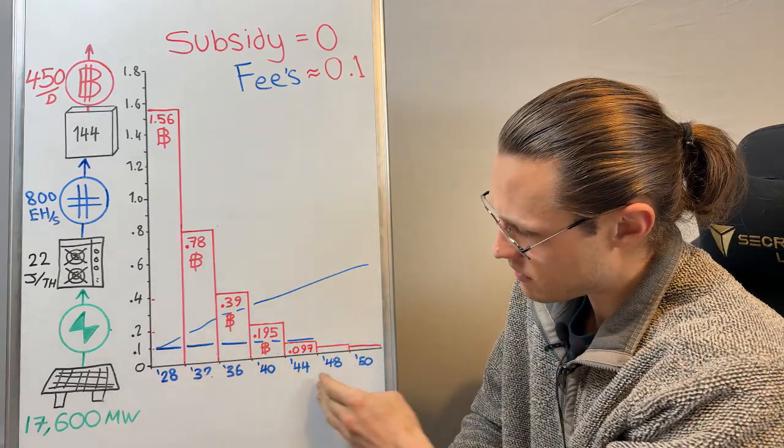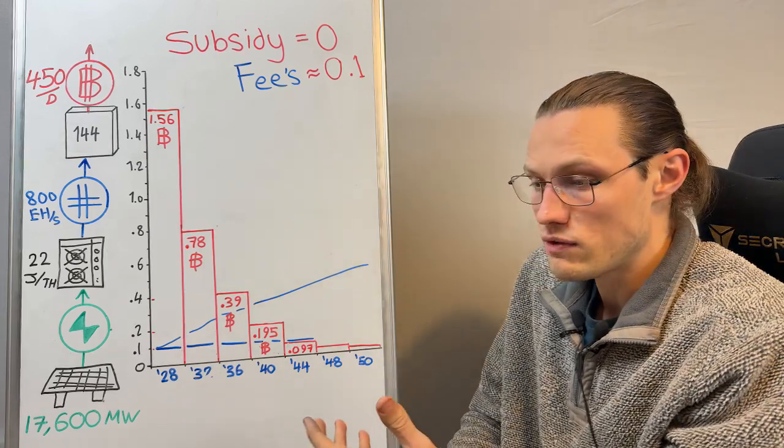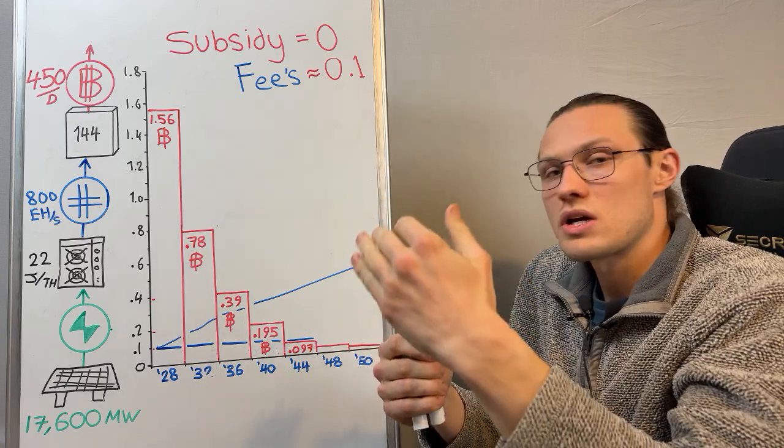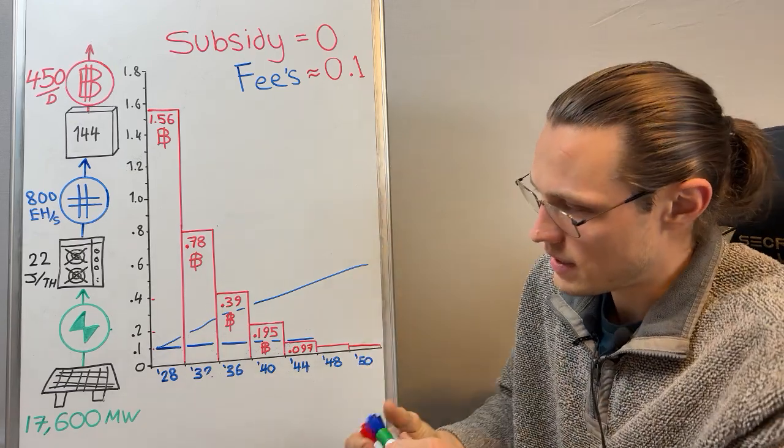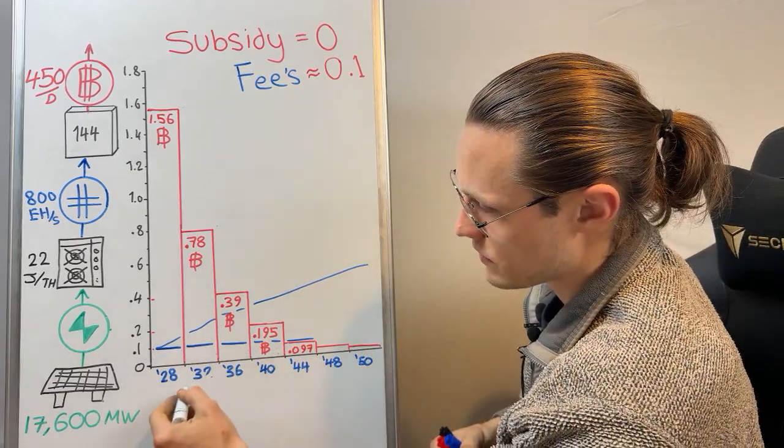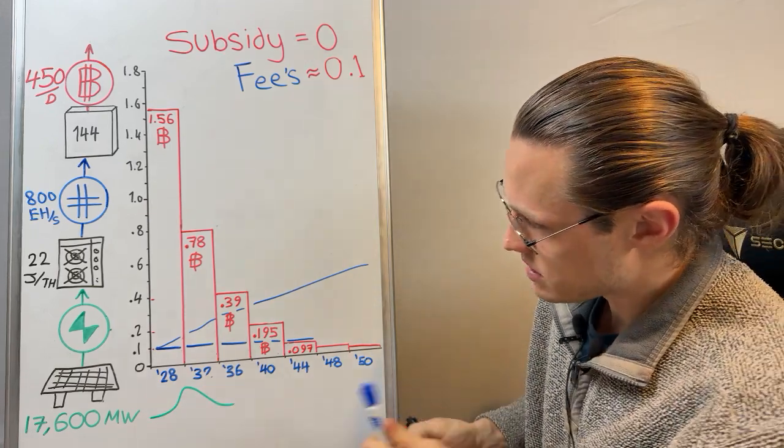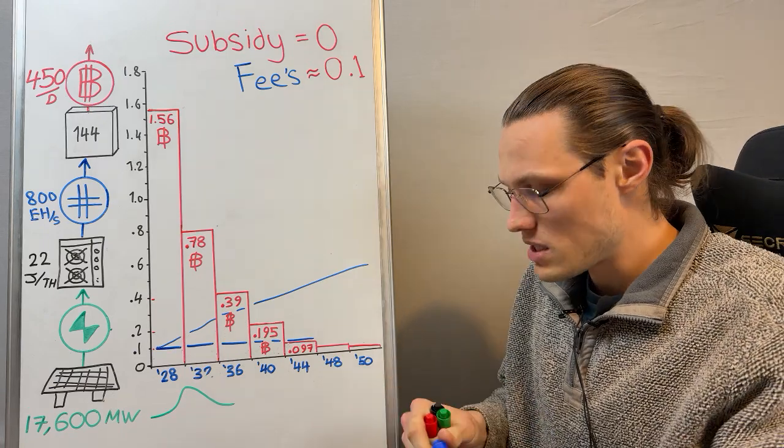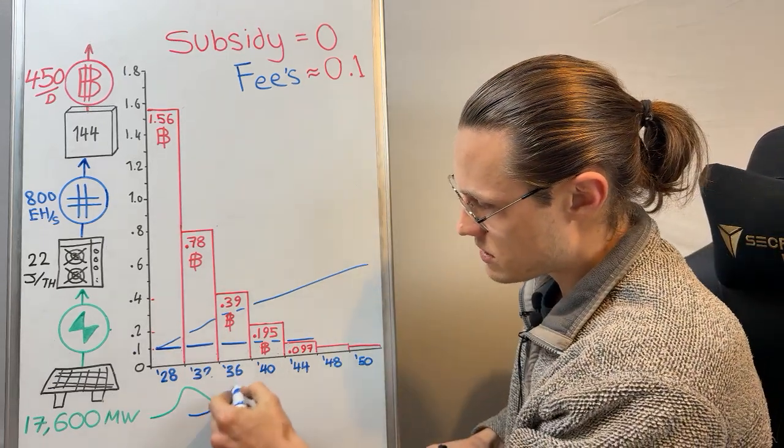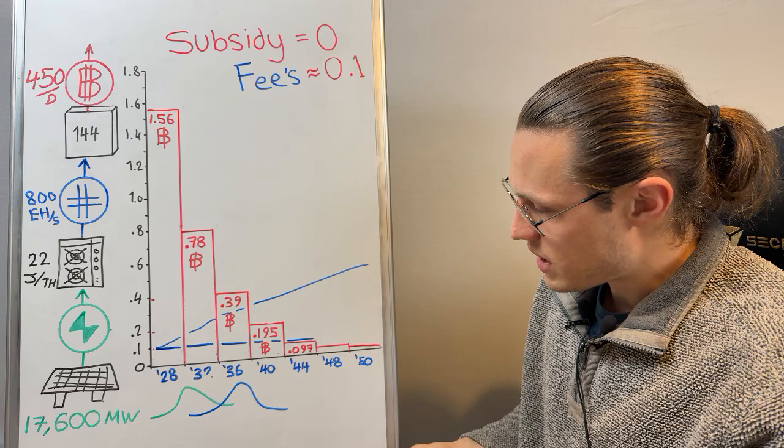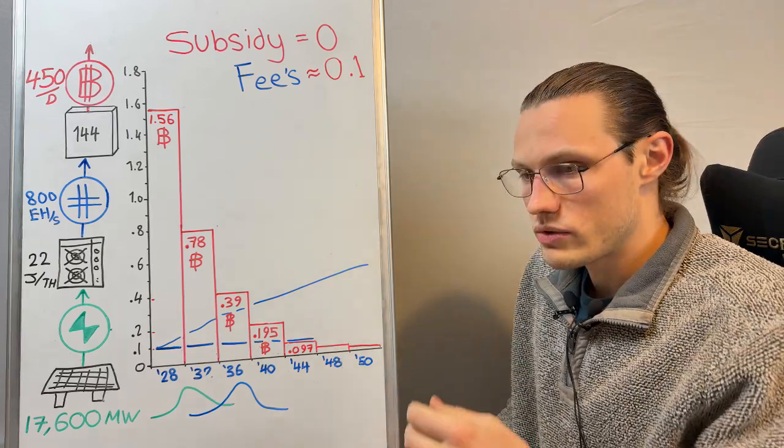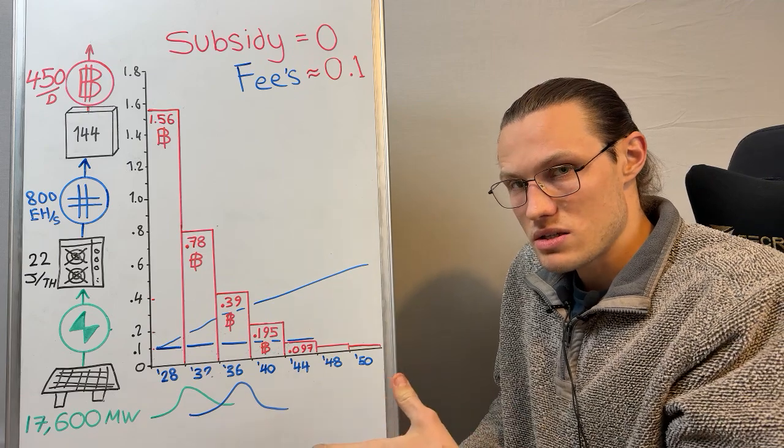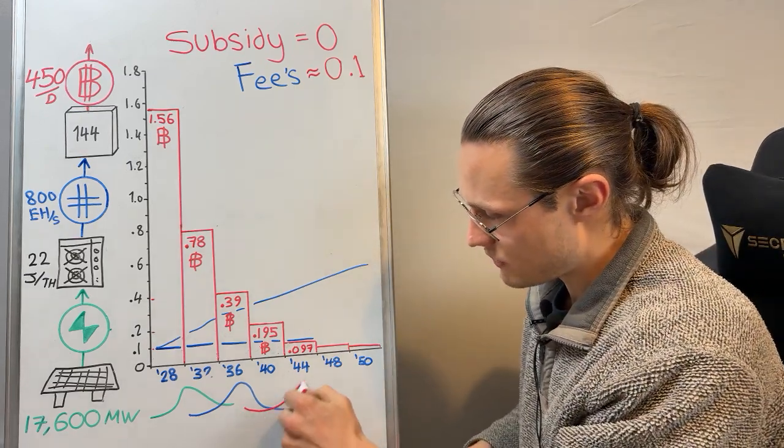The store of value phase is people's dollarized perception of Bitcoin just absolutely shooting up its own S-curve—think of it like a bell curve here. And the medium of exchange phase, that point in which subsidy drops below fees, that could represent a medium of exchange aspect. And when the majority of block rewards to miners are mostly fees, that could be the unit of account phase.